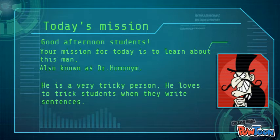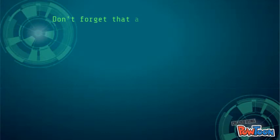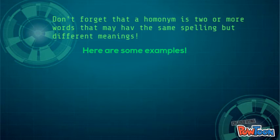He is a very tricky person. He loves to trick students when they write sentences. A homonym is two or more words that may have the same spelling but different meanings. Here are some examples.